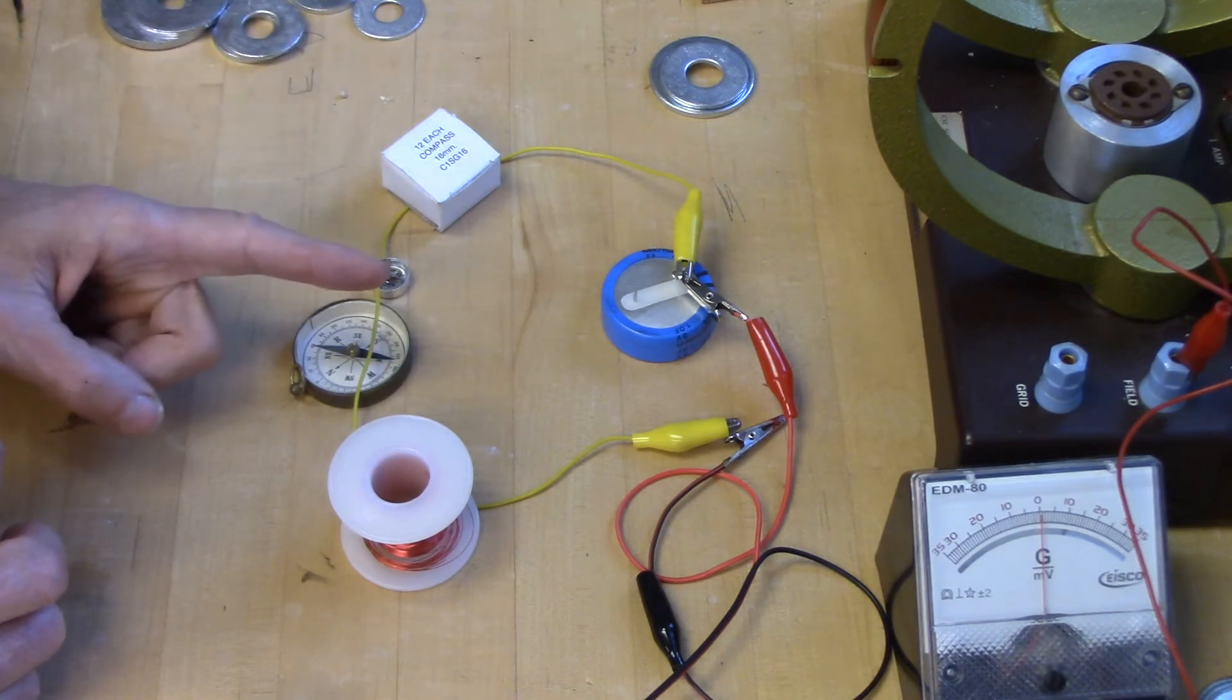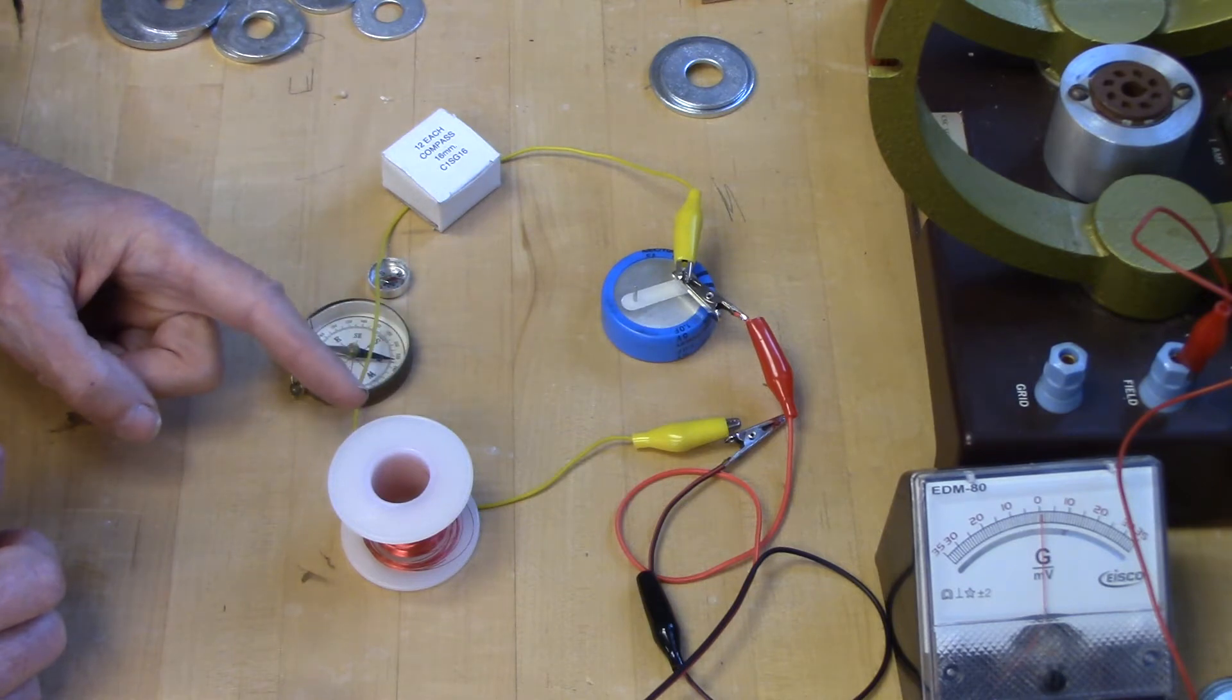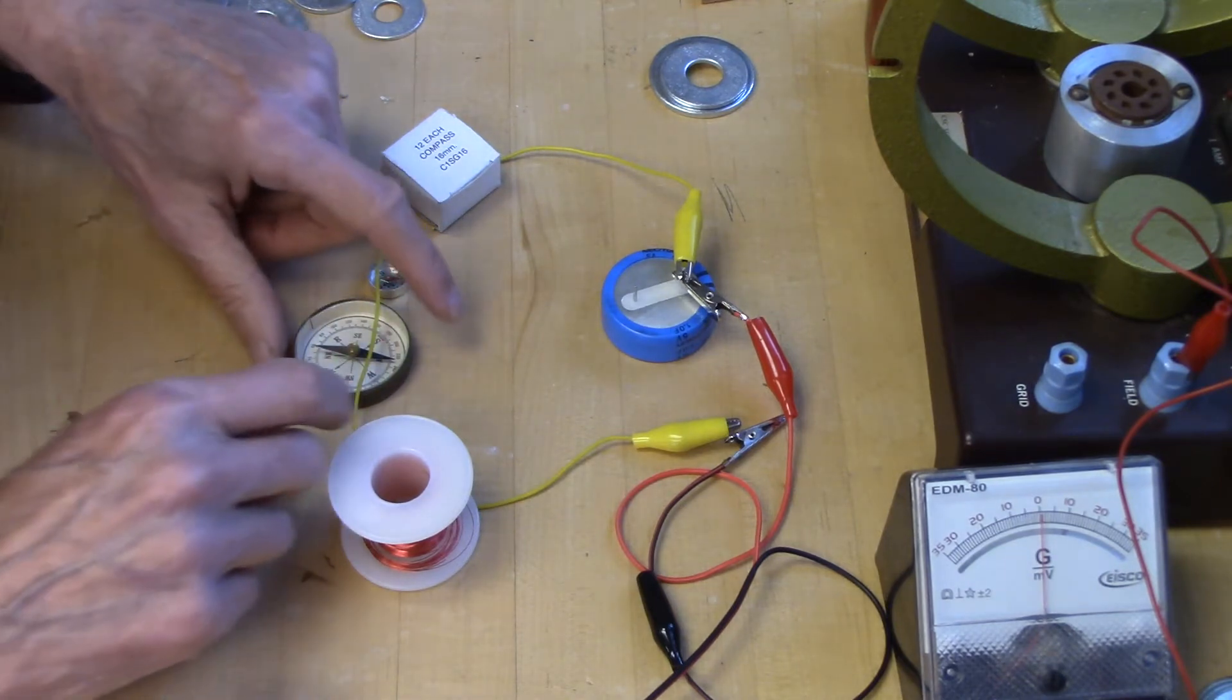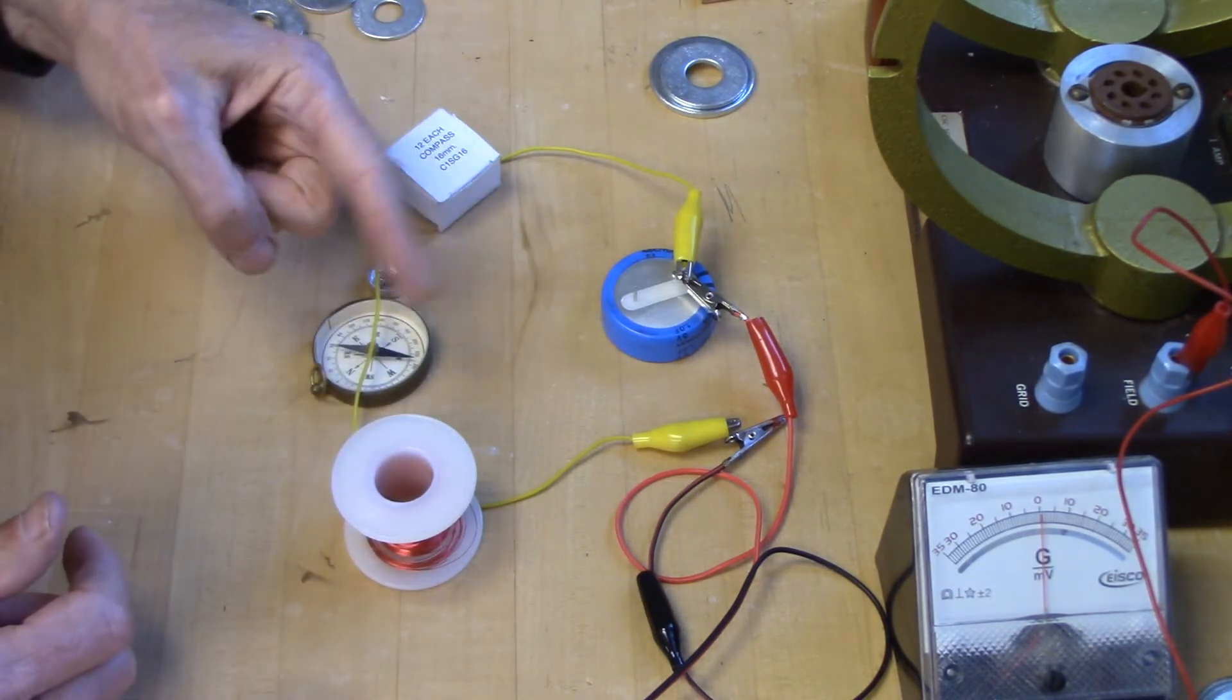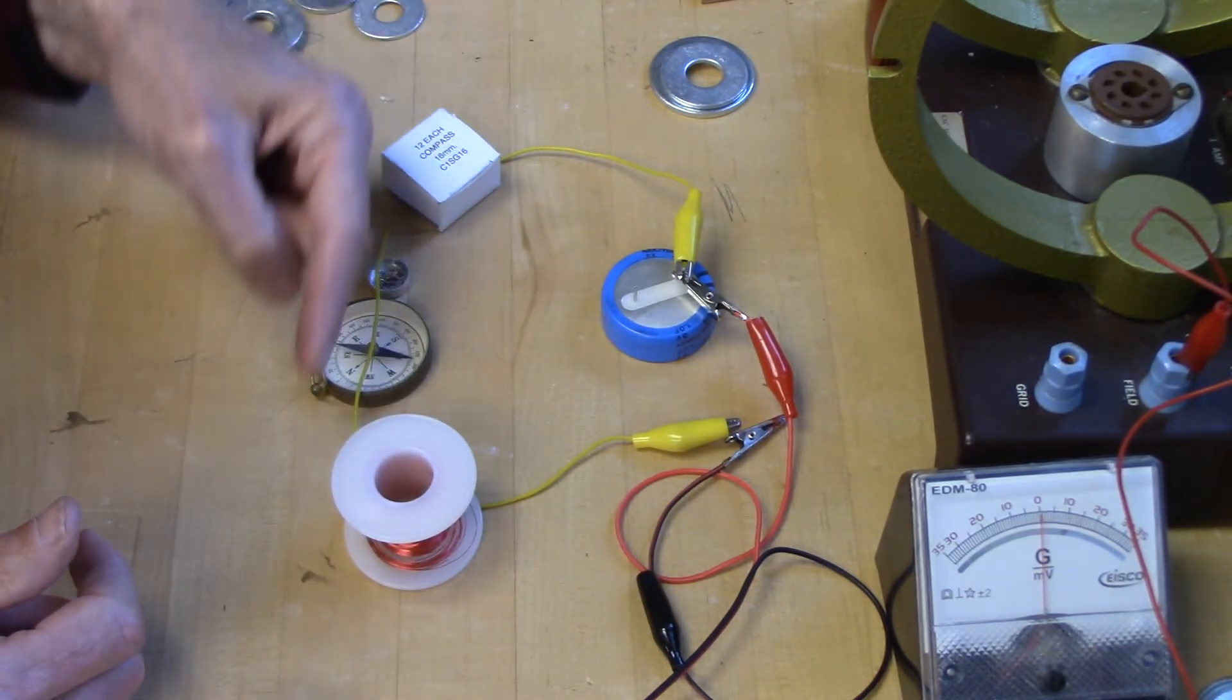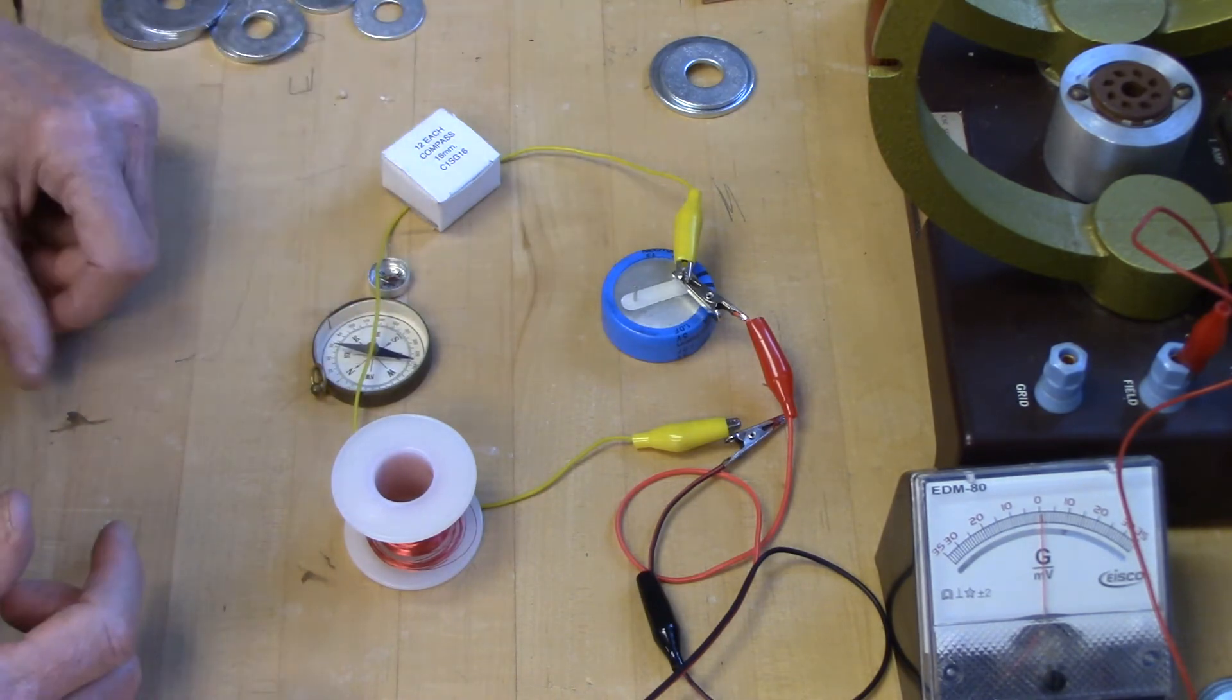But we saw what happened, and we saw that this compass deflected in this direction. Now if we had a much greater current, the compass would deflect so that the needle is pretty much aligned with the wire, with the direction of the current.